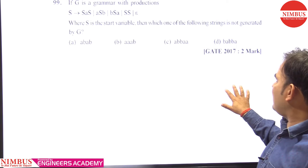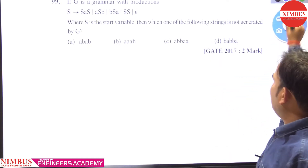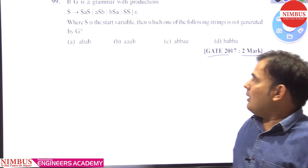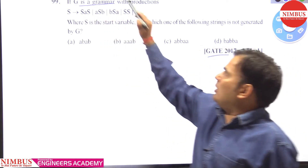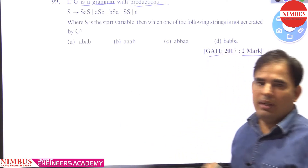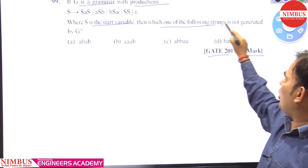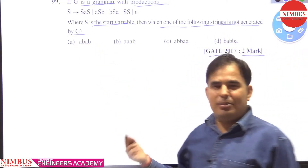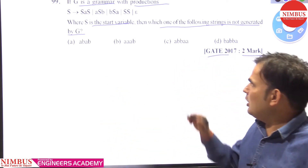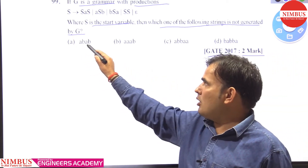Hello friends, this question was asked in GATE 2017 for 2 marks — a very simple and good question. If G is a grammar with productions given for G, where S is the start variable, then which one of the following strings is not generated by G? Let's try to check which given string is not generated by G.